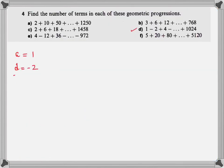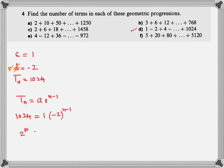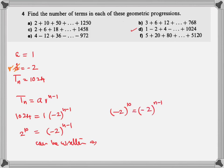Now look at this question: find the number of terms in the geometric progression where the first term is 1, the common ratio is negative 2, and the term is 1024. This is similar to what we just did, except the common ratio is negative 2. We know 2 to the power of 10 is 1024, and a negative number raised to an even power is positive, so we can write negative 2 raised to the power of 10. Therefore, negative 2 to the power of n minus 1 gives n equals 11.